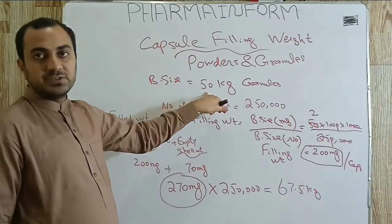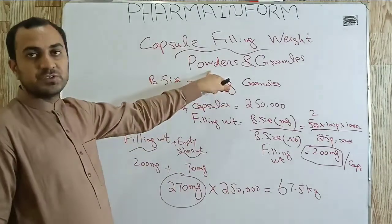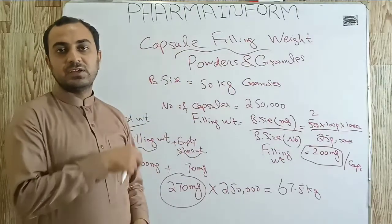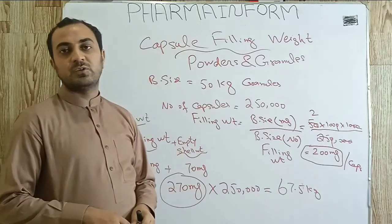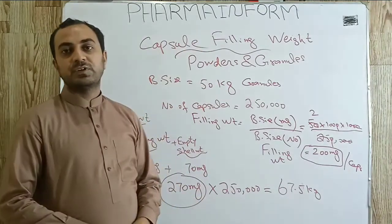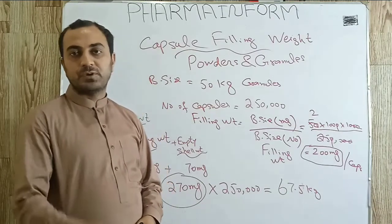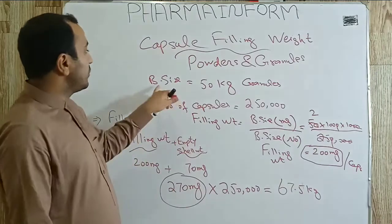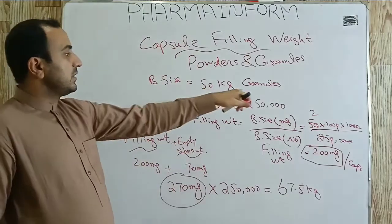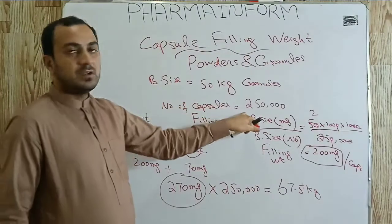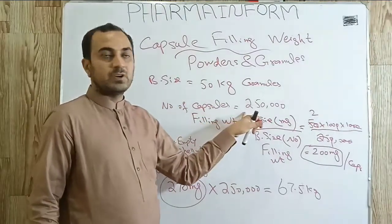Suppose we have a batch size of 50 kg. These calculations are for powders and granules. If we want to fill pellets or beads, it has a separate calculation we will discuss in the next video. So if we have 50 kg granules and we want to manufacture 2 lakh 50,000 capsules, what will be the filling weight of a capsule?